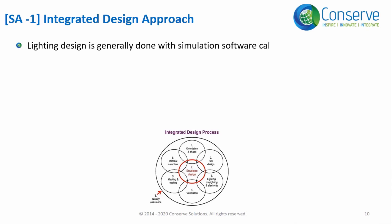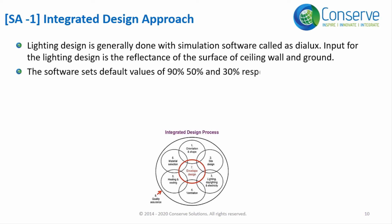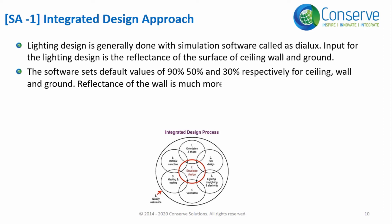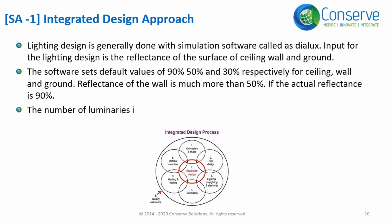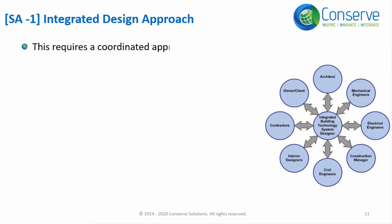Lighting design is generally done with simulation software called Dialux. One of the inputs for the lighting design is the reflectance of ceiling, wall, and ground surfaces. The software sets default values of 90%, 50%, and 30% respectively. If the actual wall reflectance is 90% instead of 50%, the number of luminaires in the building can be reduced by 20%, meaning 20% less initial cost and 20% less operational cost throughout the life of the building. This requires a coordinated approach between the lighting designer and architect.